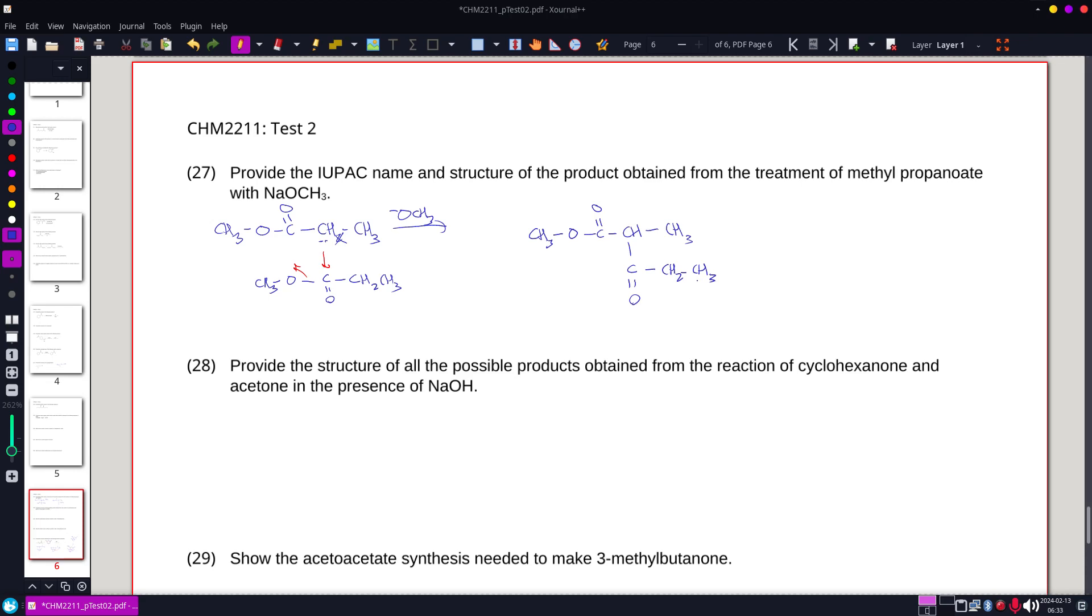But we also need to give a name for this. So my backbone, one, two, three, four, five. Starting at the ester, because ester takes priority over ketones. And I have that methyl that's part of the ester, and this methyl that's just off the backbone, and I have an oxo on there.